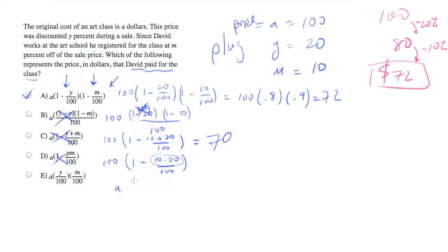And finally, let's do a times 20 over 100 times 10 over 100. Instead of a, that should be 100. That equals 2. And that is out. So there's your answer. Answer choice A.